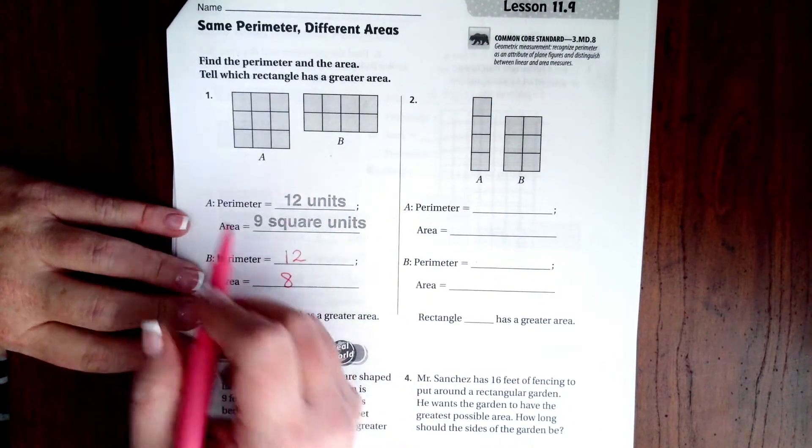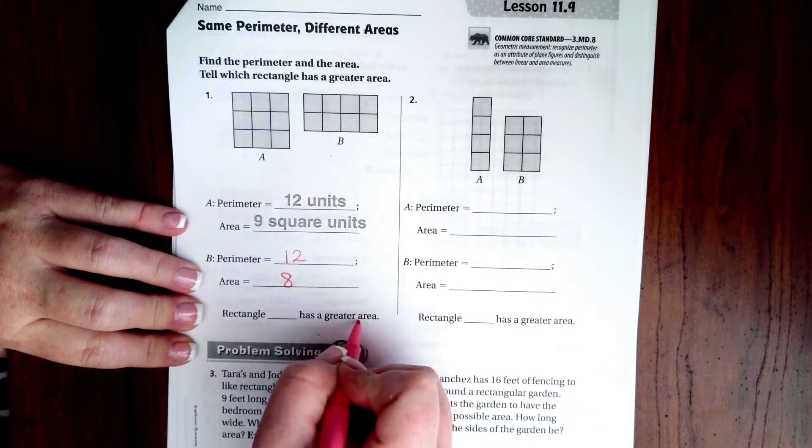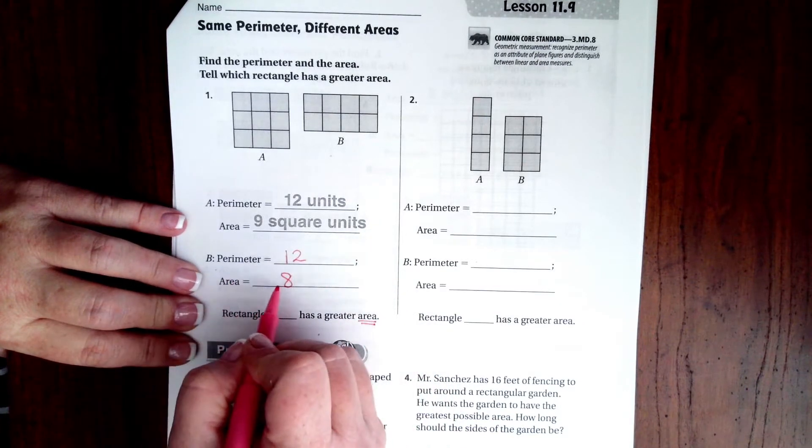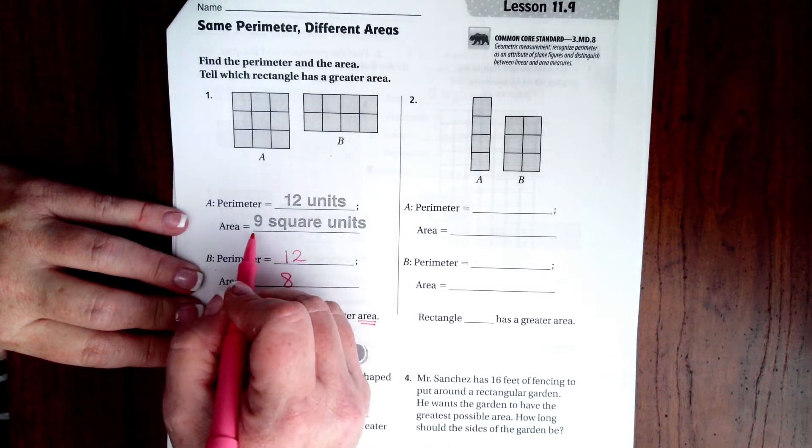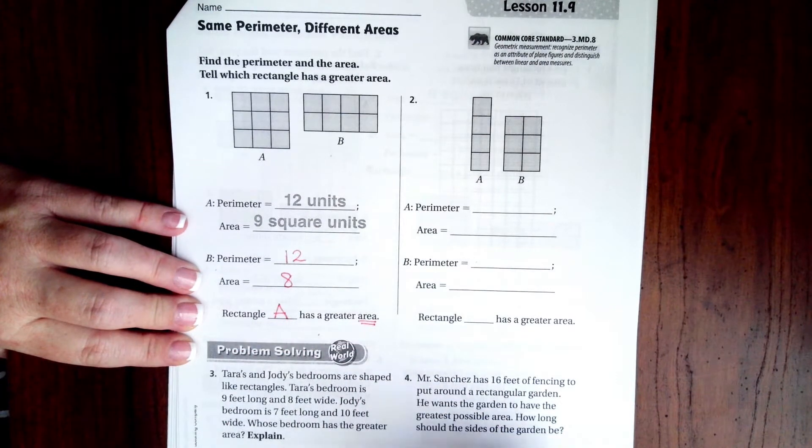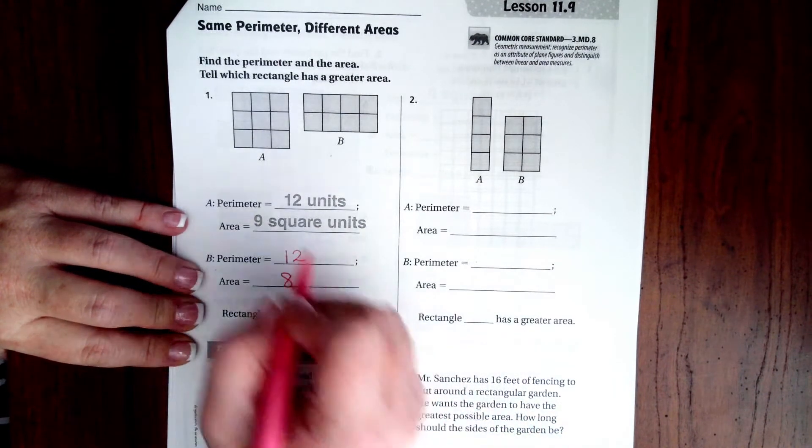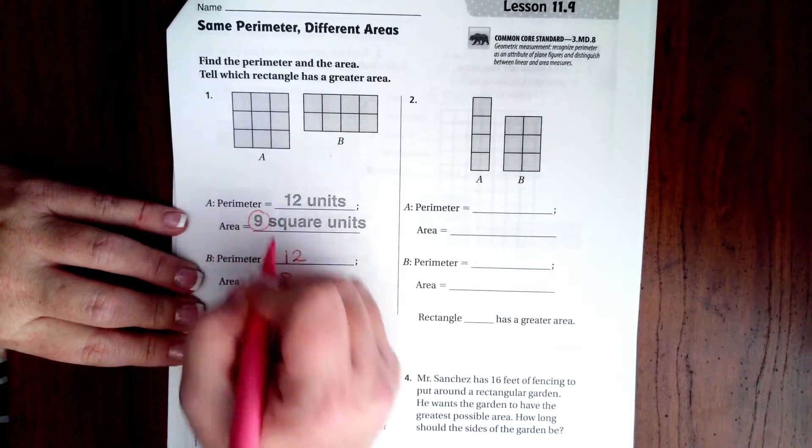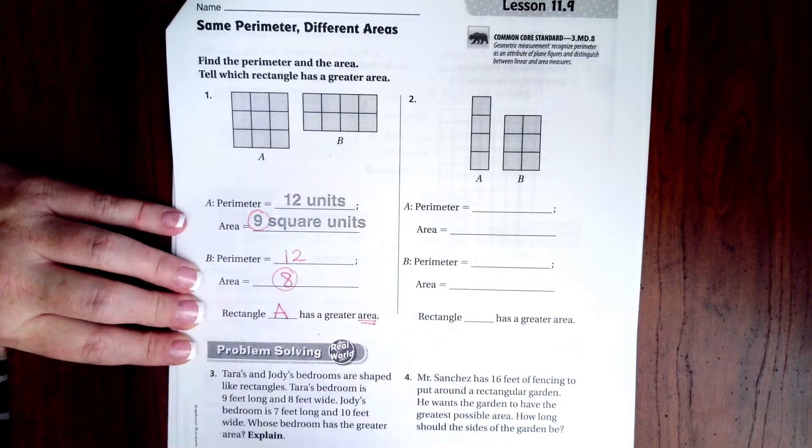So, rectangle A or B has a greater area. Area on B is 8, on A is 9, so it's going to be rectangle A has a greater area. There's more, right? We have 9 and we have 8, so A. Okay.